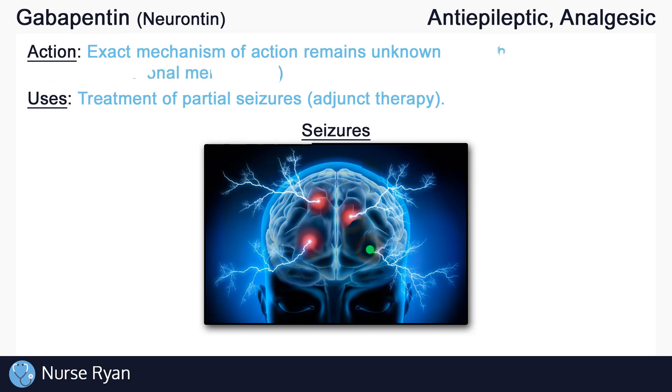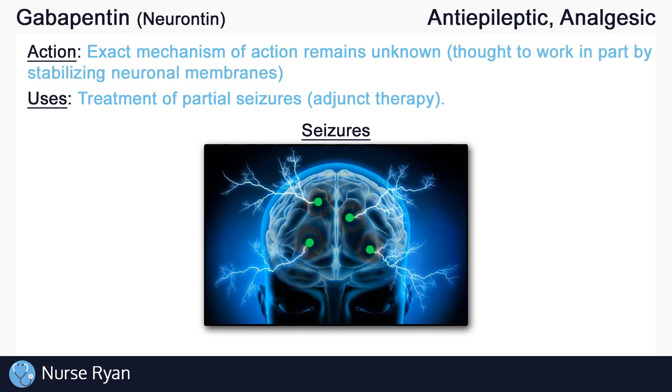Gabapentin is thought to work in part by stabilizing neuronal membranes, which may explain its use in seizures, but again, its action is not completely understood.